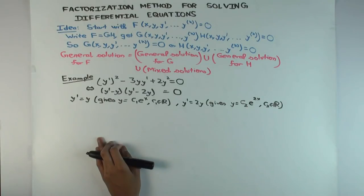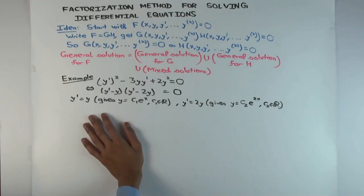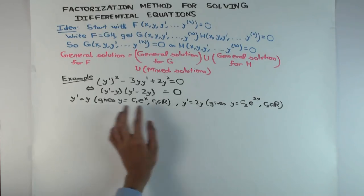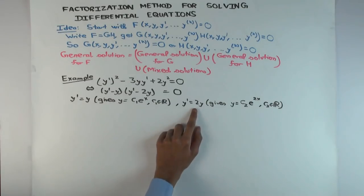Now my question is, are there any mixed solutions? Can you have a situation where for part of the domain you have y' equals y and for the rest of the domain you have y' equals 2y? Can you have switches between the two solutions? When can you have that? Well, if they switch, then at the point where they switch you'll have to have y and 2y are equal, right? So y will be zero.